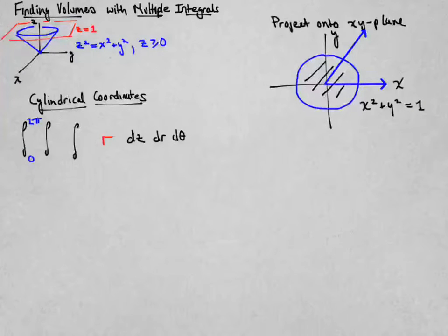Once I've determined theta, I might fix a typical value of theta between 0 and 2π. There I've drawn one in the xy plane. And then I think about the radial values that go along that ray that theta determines.